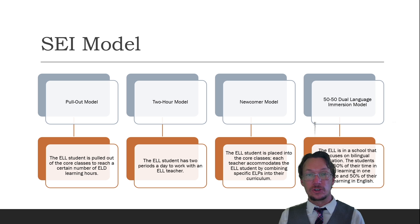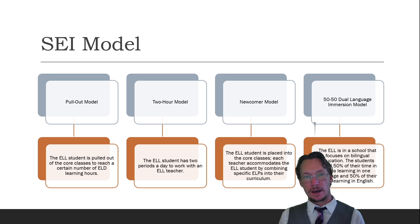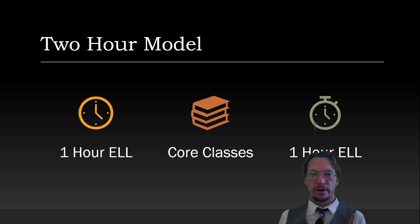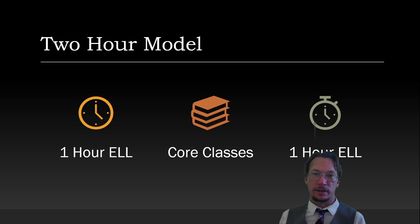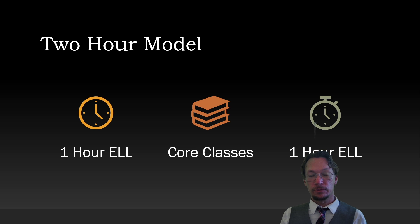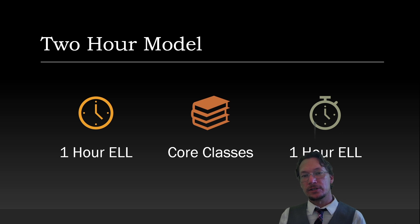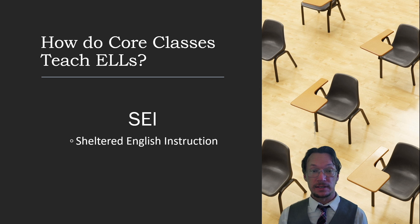One of the four SEI models is chosen by the school based on their needs and abilities. The SEI model I'm incorporating this year is the two-hour model. I requested one hour before class and one hour after classes. This allows me to touch up on concepts and expectations for the day, then students go to their core classes for English immersion. At the last period, they revisit me to discuss what they struggled with, leaving me with the question: how do core classes teach ELLs?